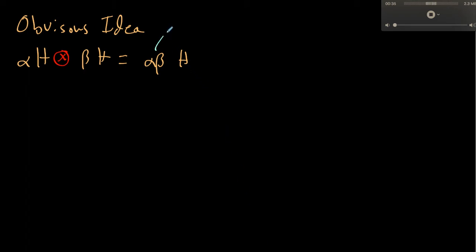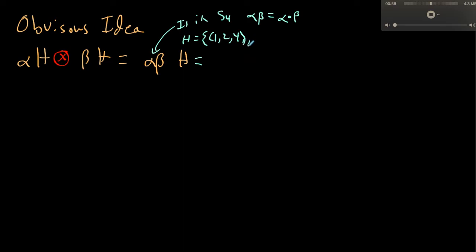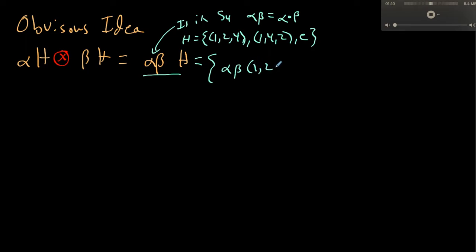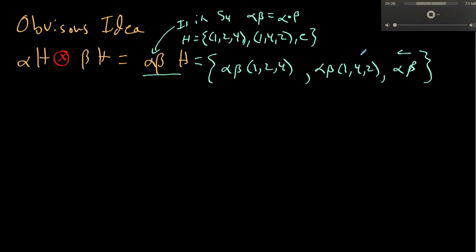The obvious choice is to define αH ⊗ βH = (αβ)H. The product αβ is in S4, and this set equals {αβ·(1→2→4), αβ·(1→4→2), αβ·e}. In each permutation product, composition is done from right to left. We have the same question as the previous video: is this proposed operation ⊗ well-defined?